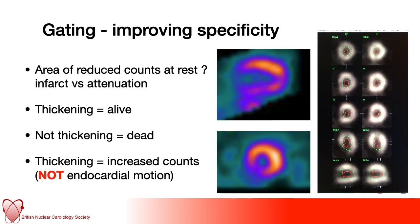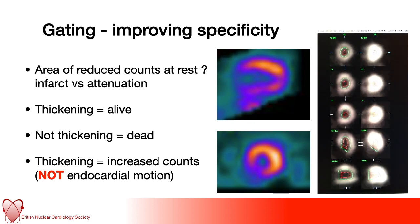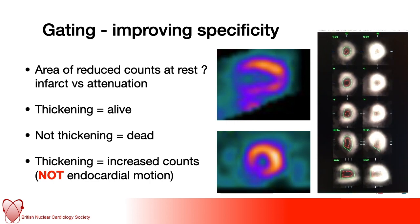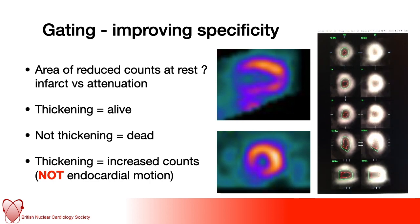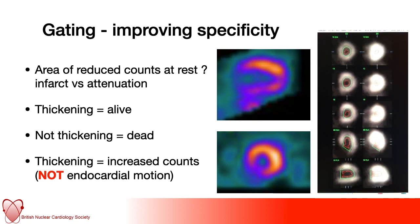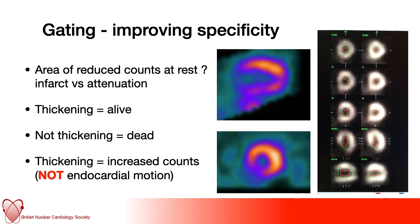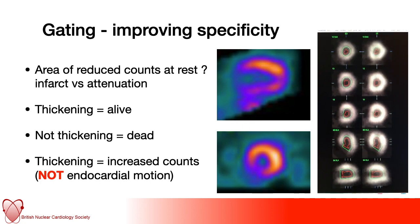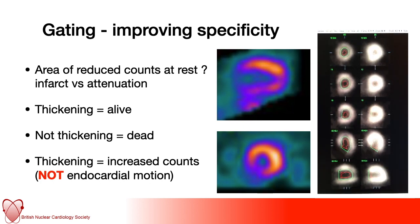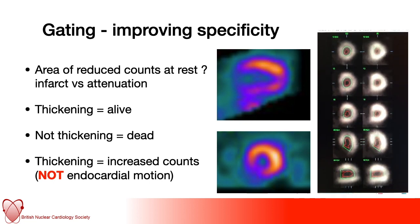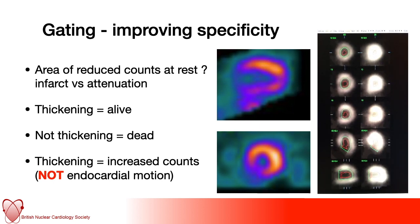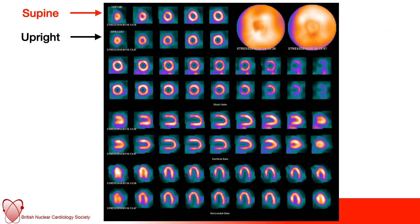This is what we're talking about with gating — giving us an idea of regional wall thickening. This is not endocardial motion as seen on echo; it really reflects increased counts in systole. In the middle slide you can see reduced counts in the inferior wall on the vertical long axis and short axis images, but on the right-hand side that wall is clearly moving very nicely. If you only saw those perfusion images you might wonder whether this was an infarct, but the normal wall motion makes clear it is not dead — this likely reflects subdiaphragmatic attenuation, perhaps a large abdomen, rather than true disease.